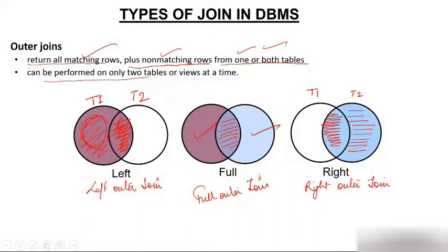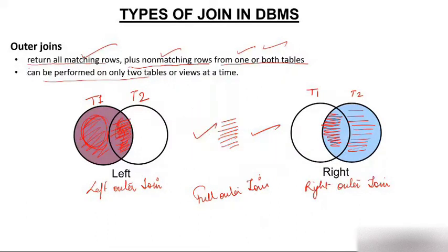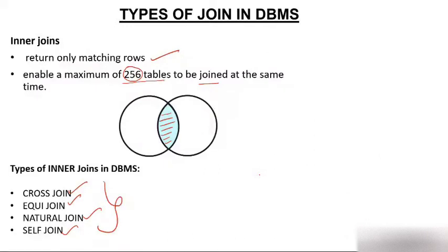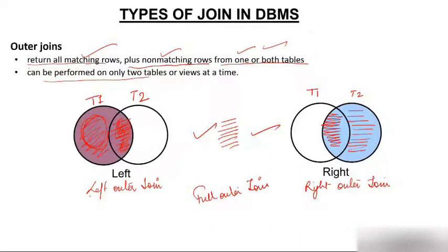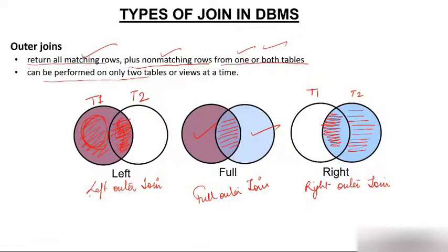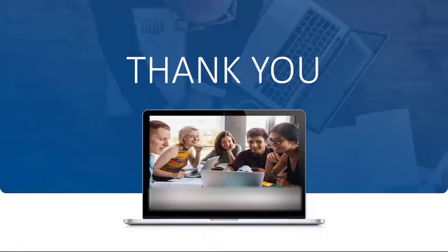So I've tried my best to explain what a join is, why we need to join tables, and the different types of joins. Inner join gives only the matching rows and has four sub-types: cross, equi, natural, and self join. Outer join has three types: left outer join, right outer join, and full outer join. Thank you so much.